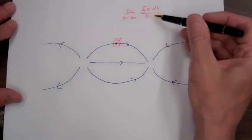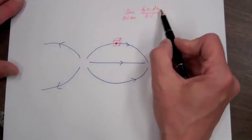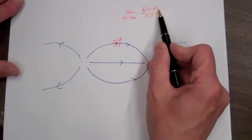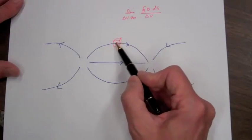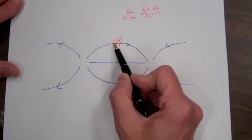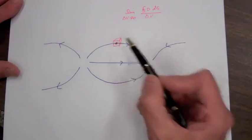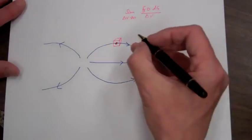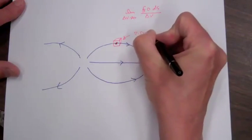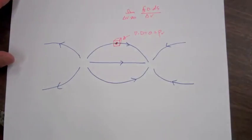The denominator is always going to be positive even though it is getting smaller and smaller. Looking at the numerator, the integral of D dot dS tells us how much flux is leaving this volume, but whatever flux enters also leaves, so the integral of D dot dS around this surface is going to be zero. So at that point the divergence is zero, telling us there is no charge density at that point.